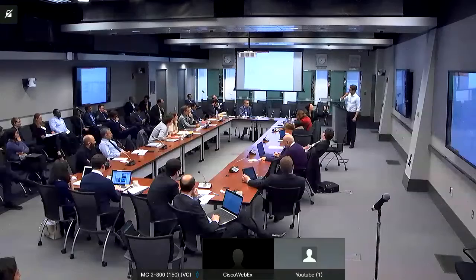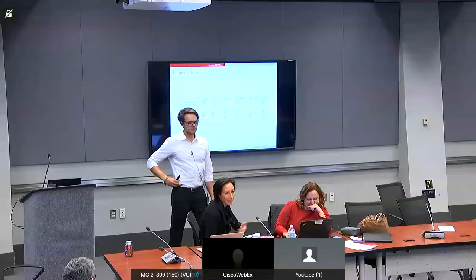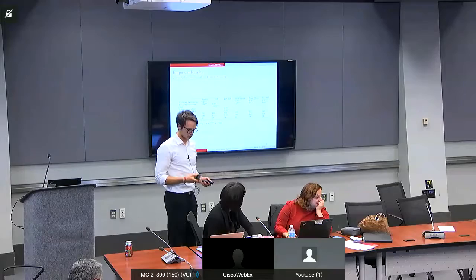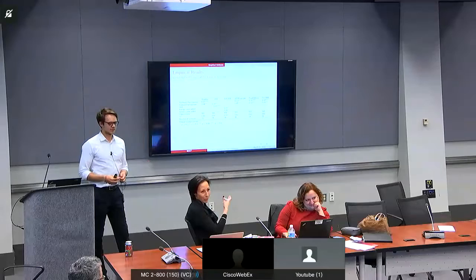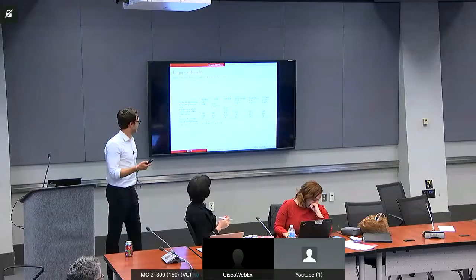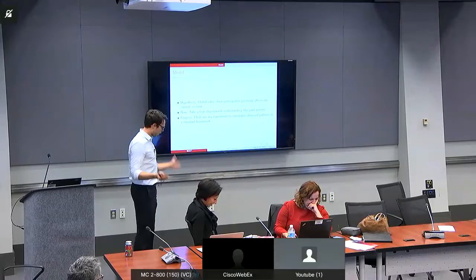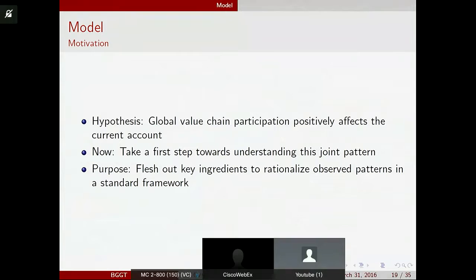Moving from the empirics: the hypothesis we're posting is that global value chain participation — seemingly in both directions — positively affects the current account. Based on this, we want to take a first step toward understanding this. This is not meant to say this is fully a GMM-estimated model, but we want to see what key ingredients would be needed in an international real business cycle model to rationalize such patterns.